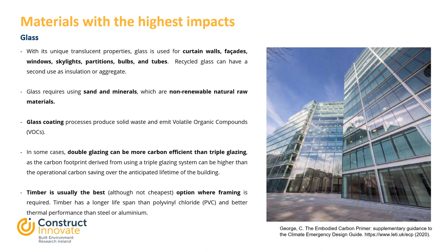Glass has unique translucent properties and is used for curtain walls, facades, windows, skylights, partitions, bulbs and tubes. Recycled glass can have a second use as insulation or aggregate. Glass requires sand and minerals, which are non-renewable natural raw materials. Glass coating processes produce white solid waste and emit VOCs — volatile organic compounds. In some cases, double glazing can be more carbon efficient than triple glazing, as the carbon footprint derived from using a triple-glazed system can be higher than the operational carbon saving over the anticipated lifetime of the building. Timber is usually the best option when framing is required, as it has a longer lifespan than PVC and better thermal performance than steel or aluminium.